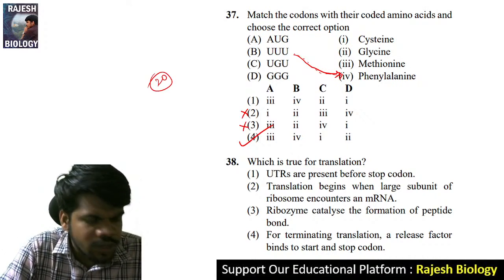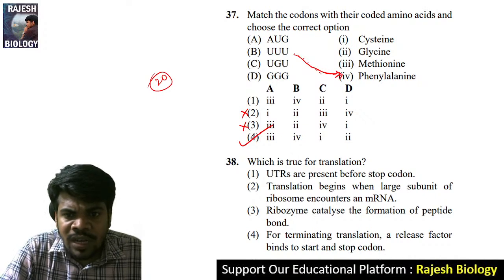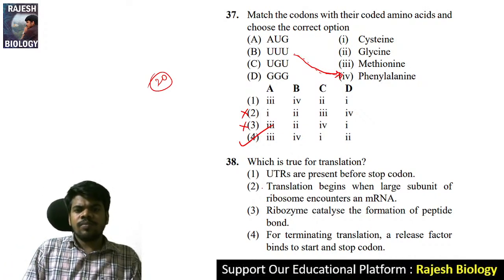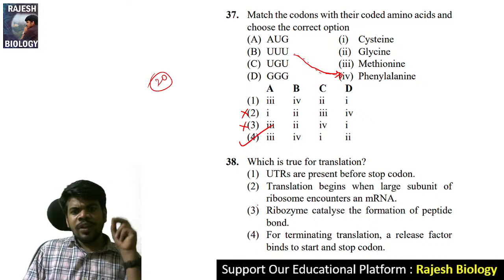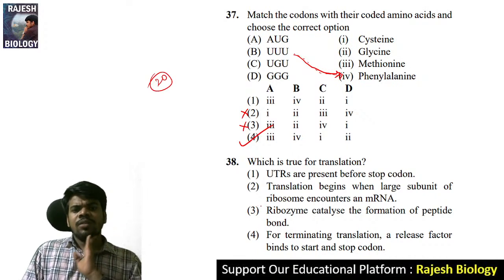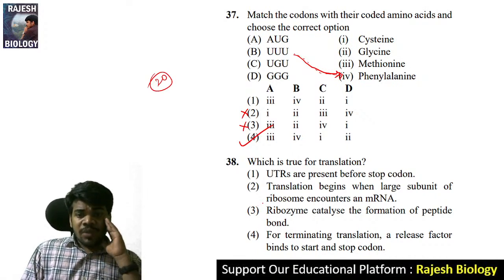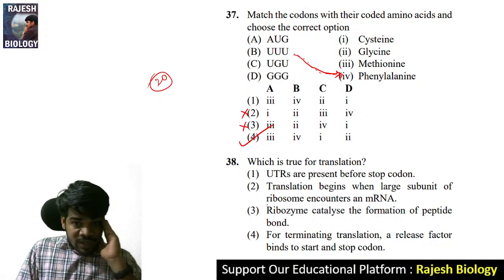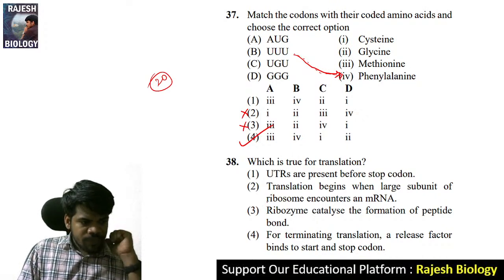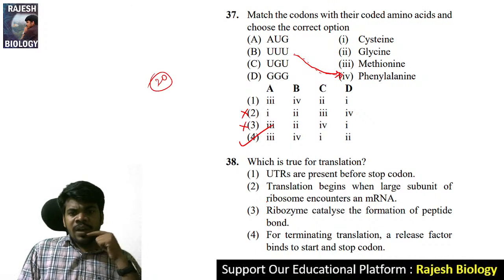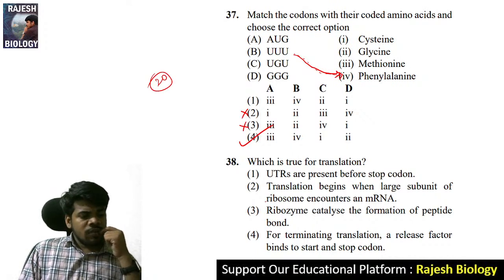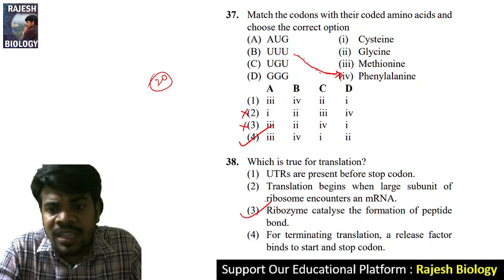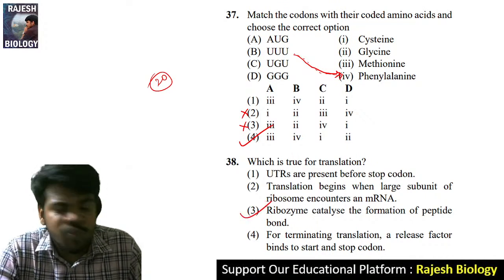Question 38: which is true about translation? A tRNA is present before the stop codon. Translation begins when the large subunit of the ribosome encounters an mRNA. For terminating translation, a release factor binds to the stop codon. The ribosome catalyzes the formation of peptide bonds — this is the right answer, option one.